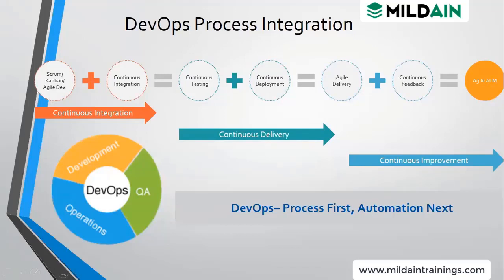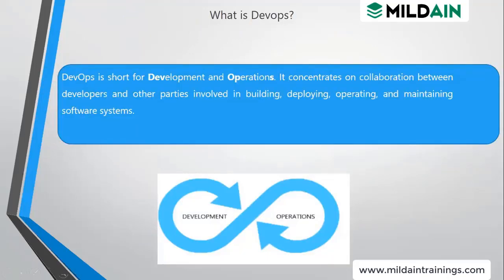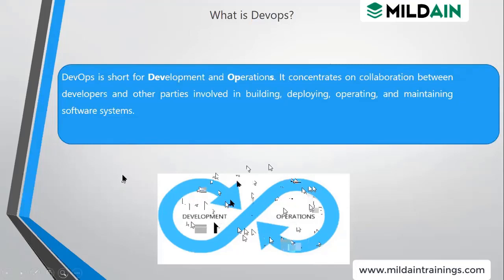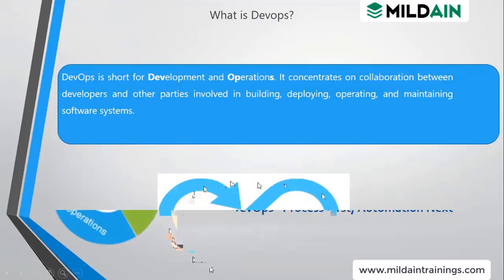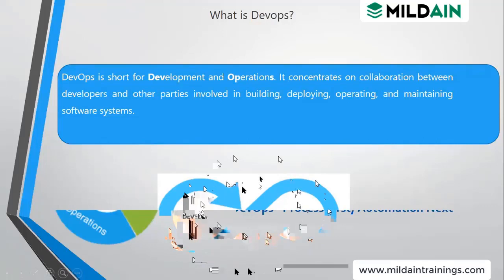DevOps in short is development and operations — dev and ops are in sync with each other, not in different silos. There is collaboration between them. In a DevOps process all parties are involved from the beginning. It is not like the traditional form where only developers and business analysts were there first, testers came later, and then it went to operations.